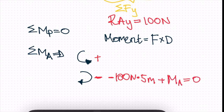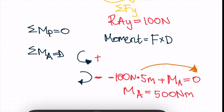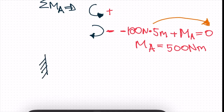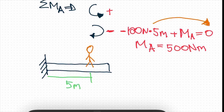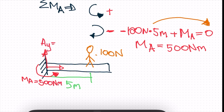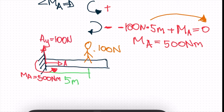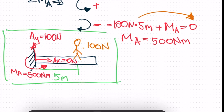Moving 100 times 5 to the other side, MA is equal to 500 newton-meters. If we redraw our cantilever beam with the person standing 5 meters from the fixed end, this person weighs 100 newtons, and we have three reactions: RAX equals zero, RAY equals 100 newtons, and MA equals 500 newton-meters. We've now solved this beam and its reactions using the equilibrium equations.